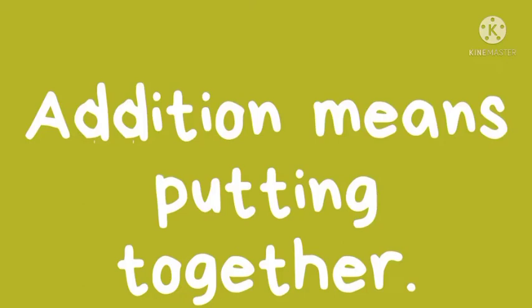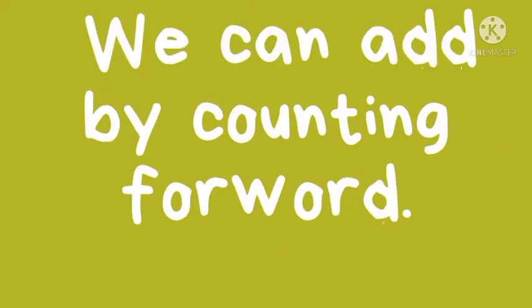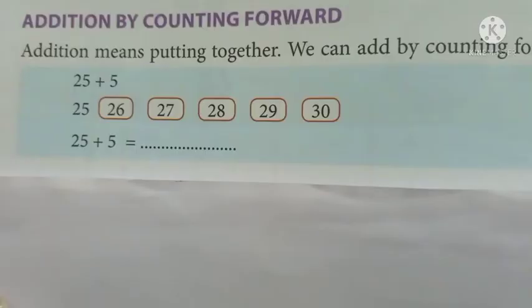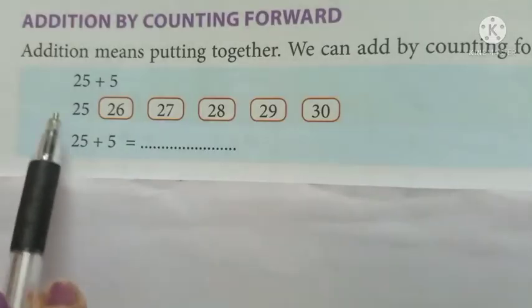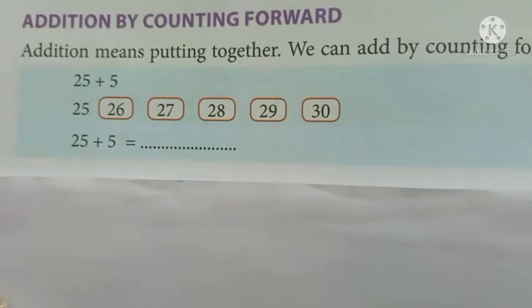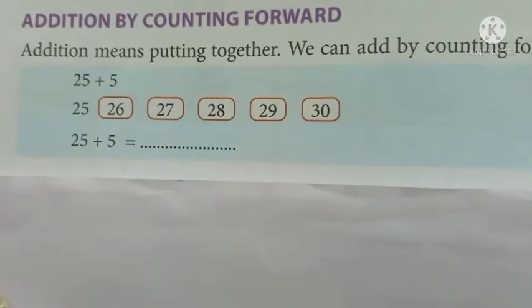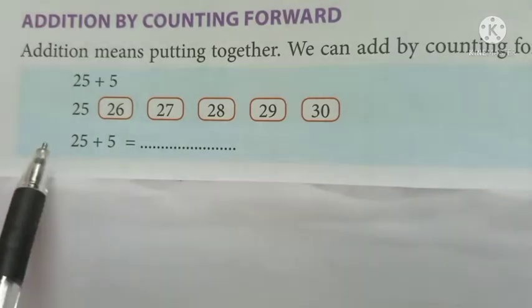Addition means putting together. We can add by counting forward. Here the question is 25 plus 5. That means we have to write 5 more numbers after 25.